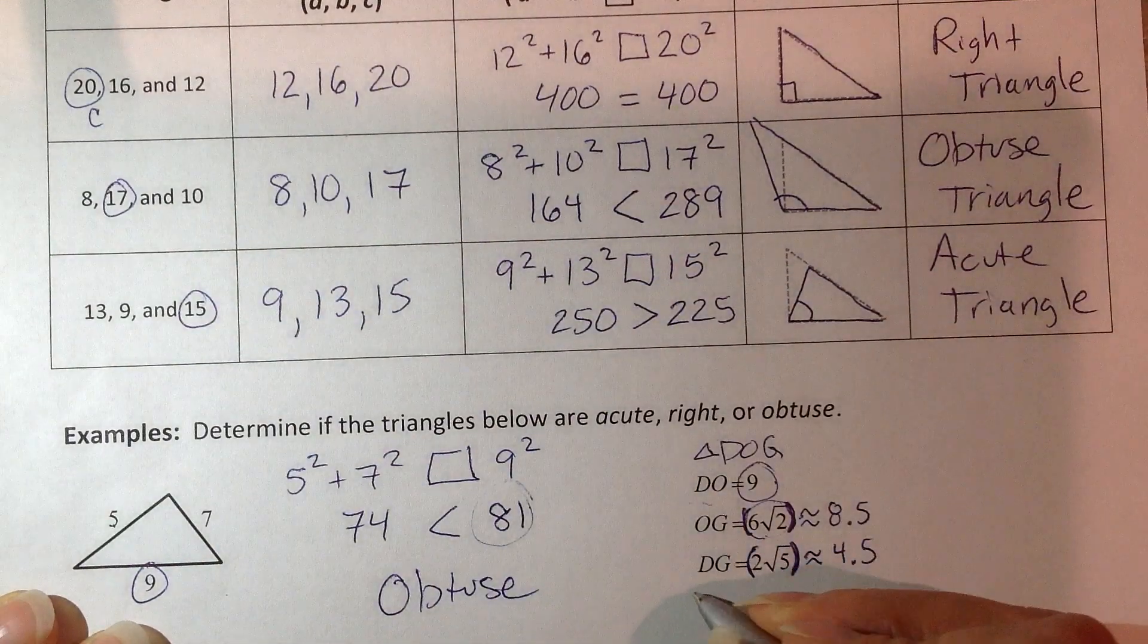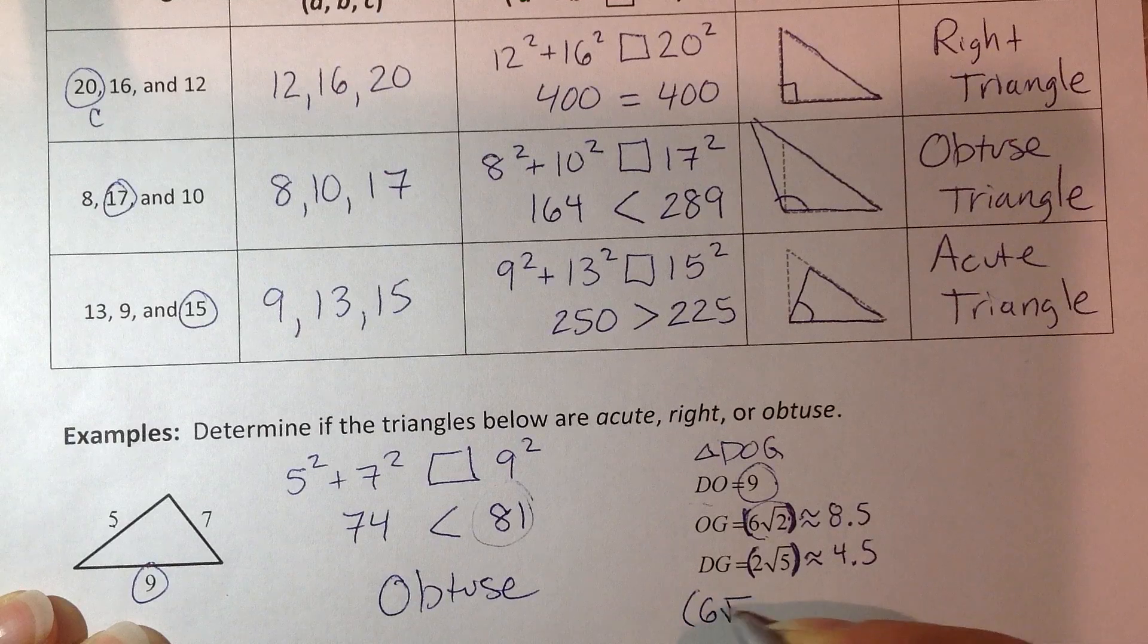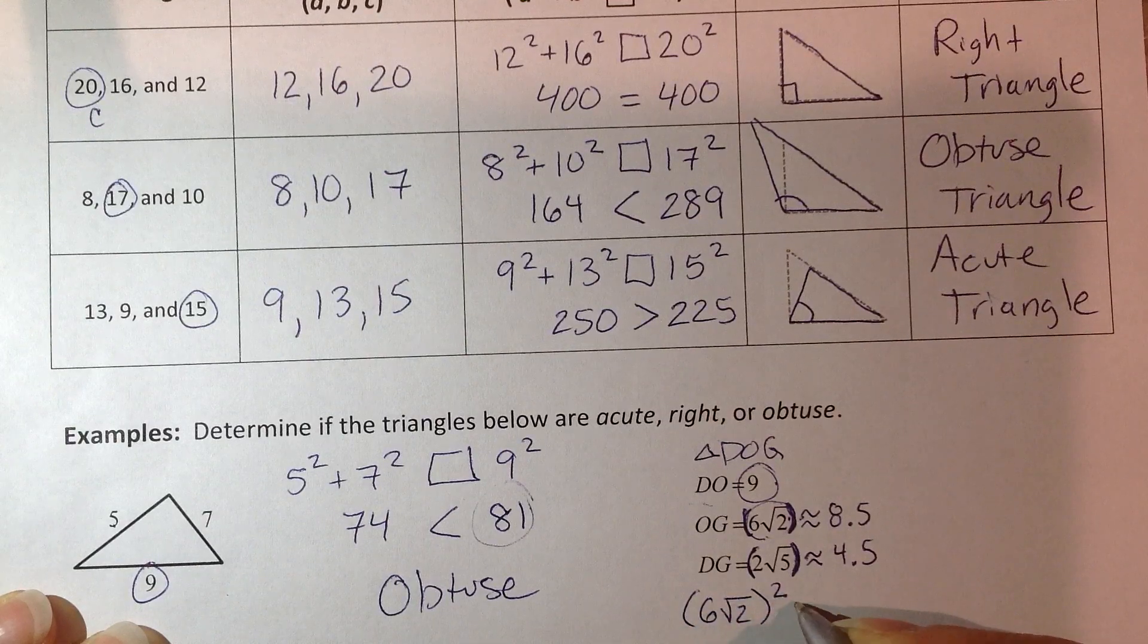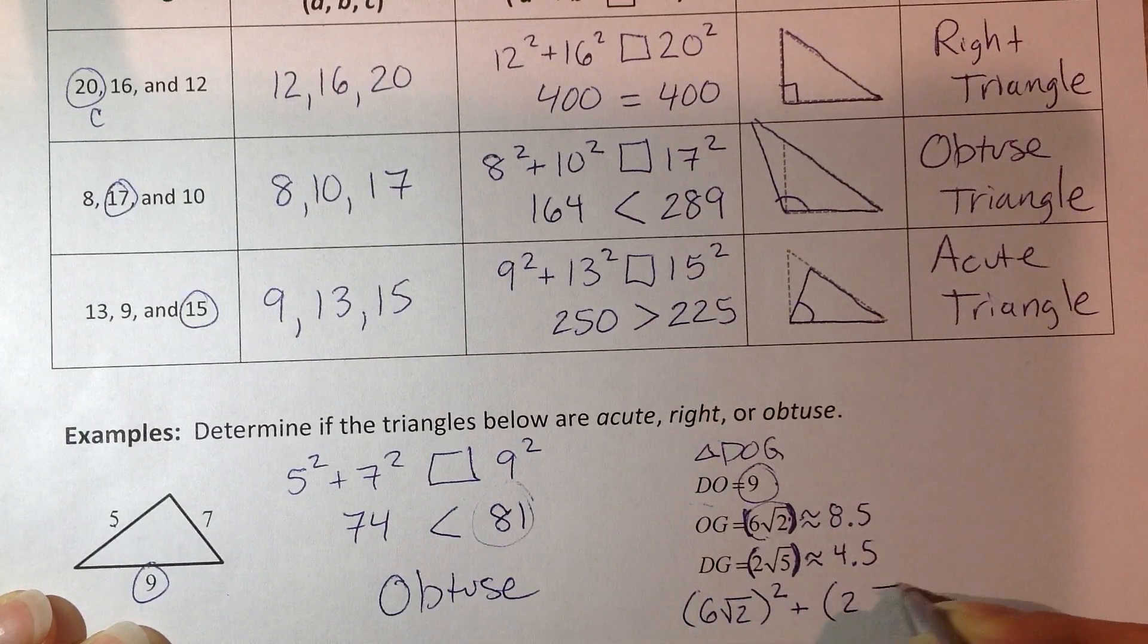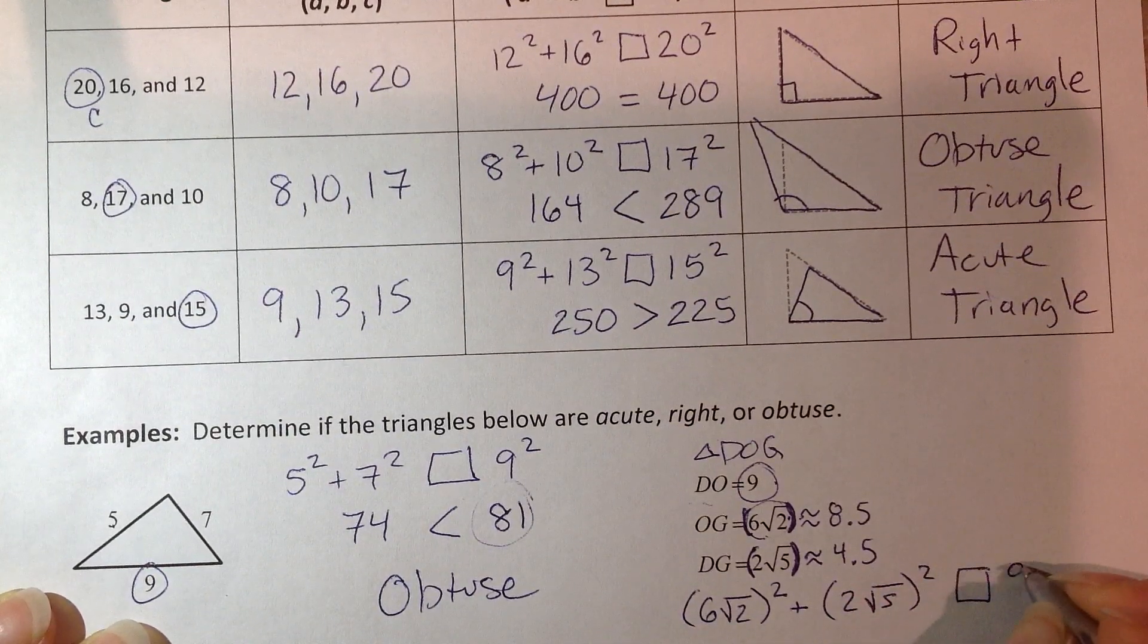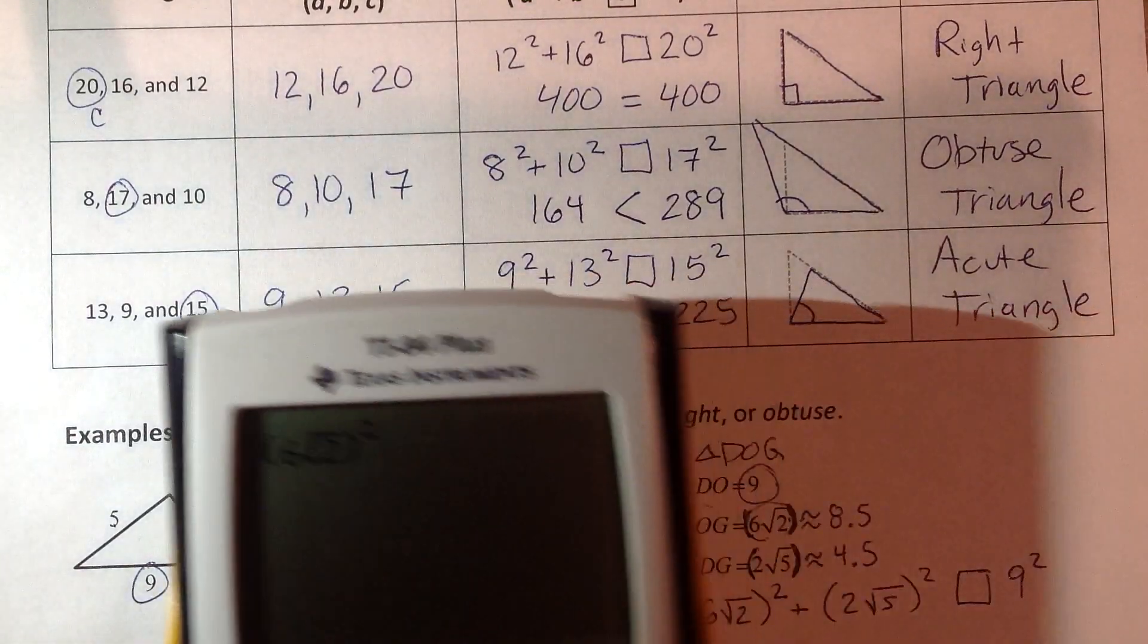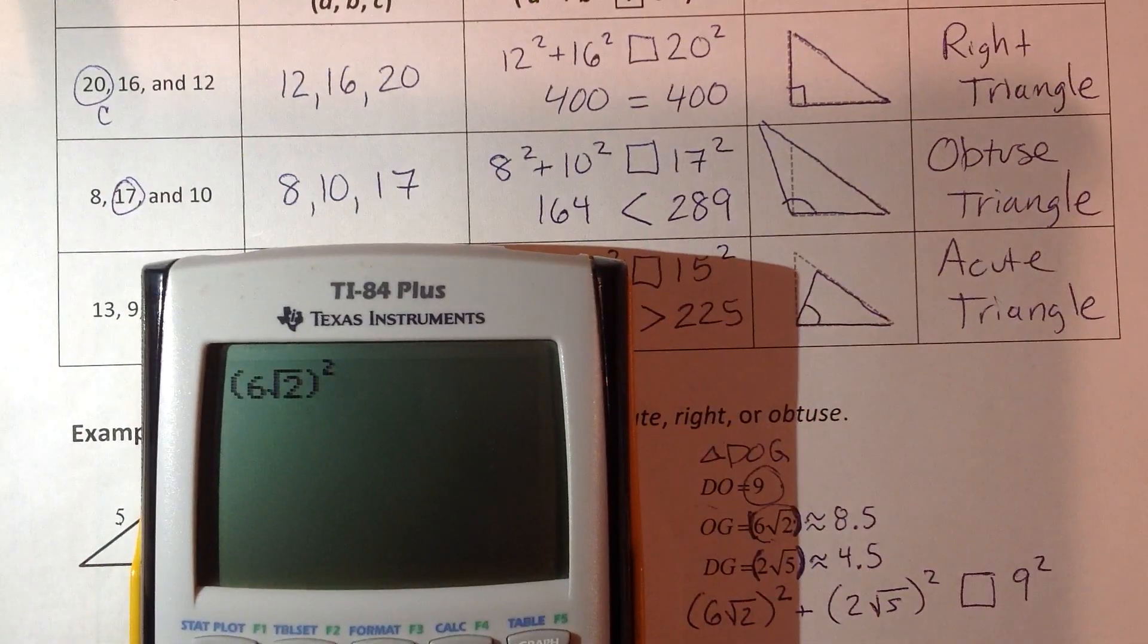So let's see how we want to set this up. These are my two shorter ones. So it's going to be 6 square root of 2 squared plus 2 square root of 5 squared. How does that compare to 9 squared? So again, put this in your calculator. You can do it all at once. Make sure you use parentheses.